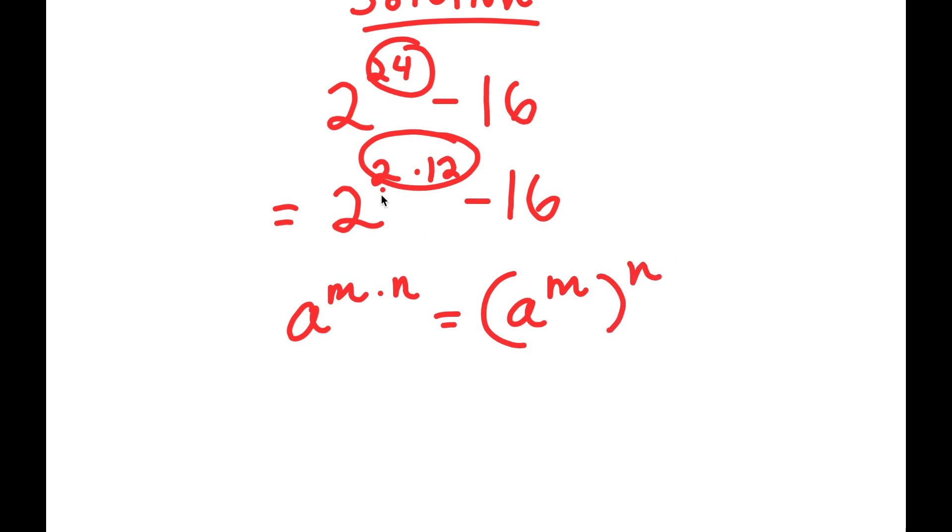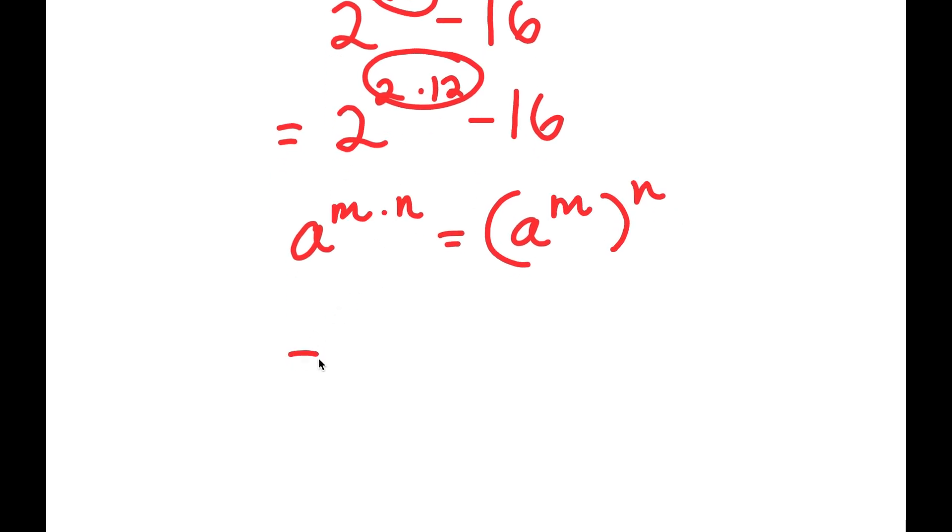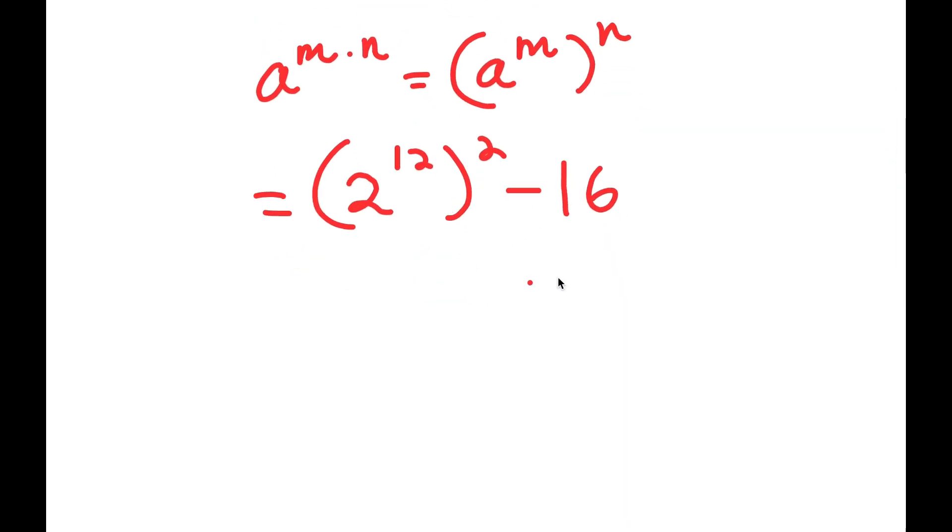So in this case, we have 2 to the power of 2 times 12, and I can rewrite that as 2 to the power of 12 to the power of 2, and I have this minus 16. And now I'm going to rewrite 16 as 4 squared. So I get 2 to the power of 12 to the power of 2 minus 4 squared.